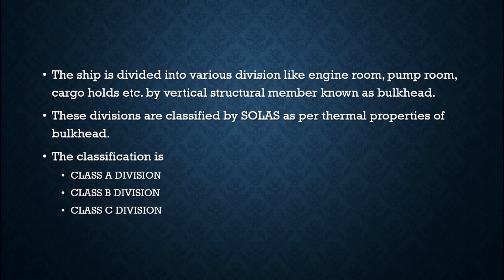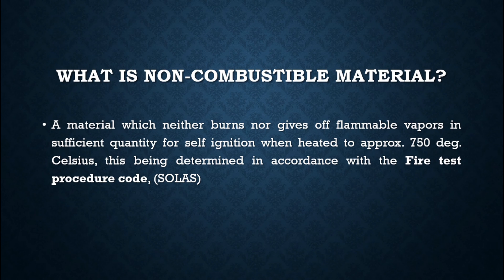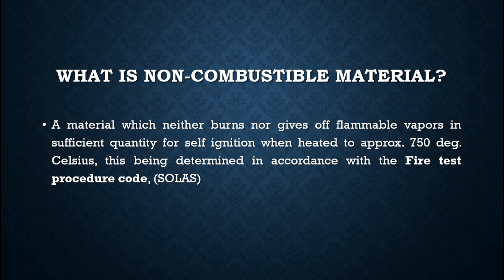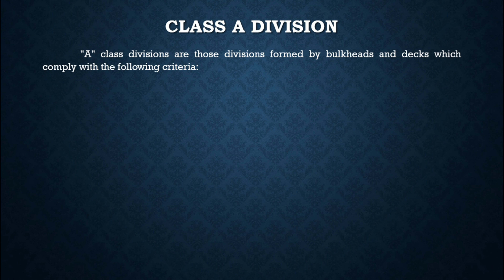Before discussing the divisions, we will see what is a non-combustible material. A non-combustible material is one which neither burns nor produces flammable vapors in sufficient quantity for self-ignition when heated to approximately 750 degrees Celsius. This is determined in accordance with the fire test procedure code mentioned in SOLAS.